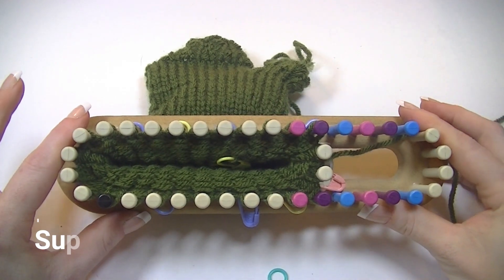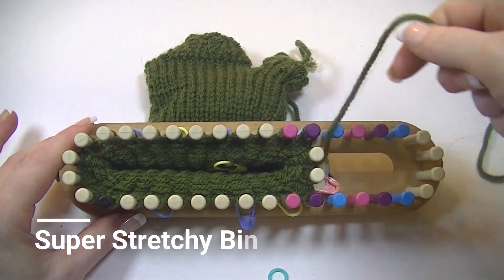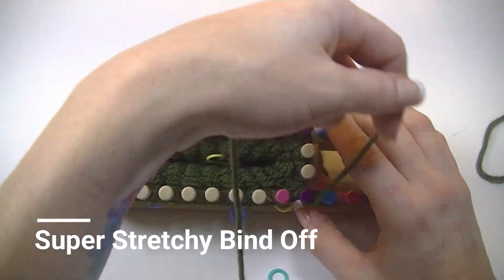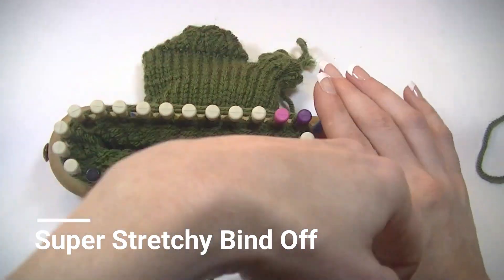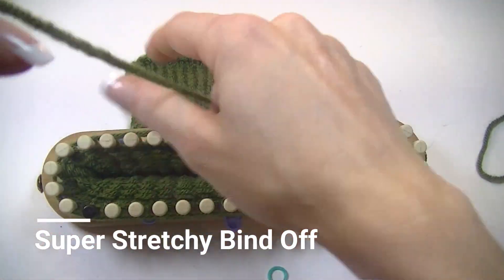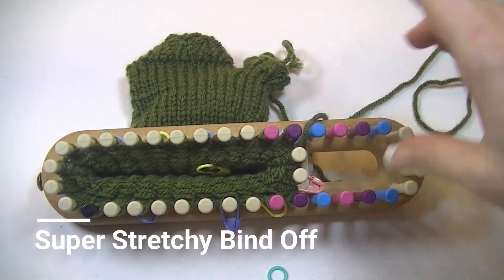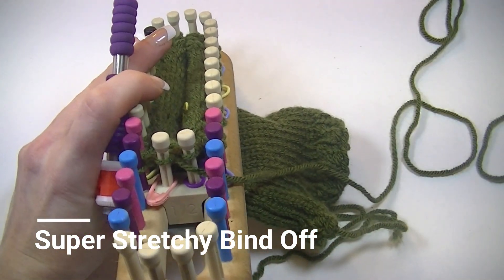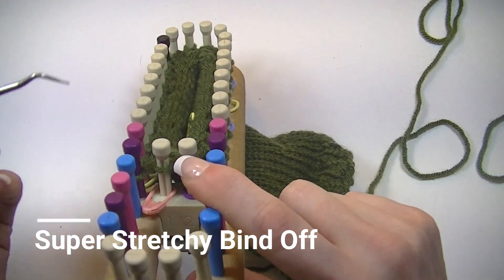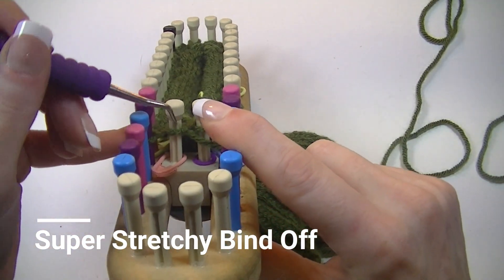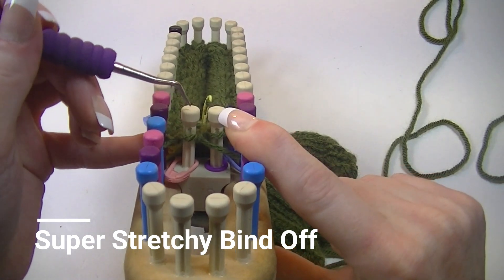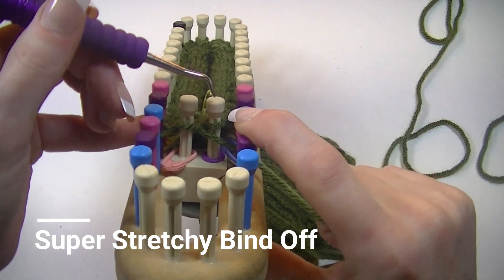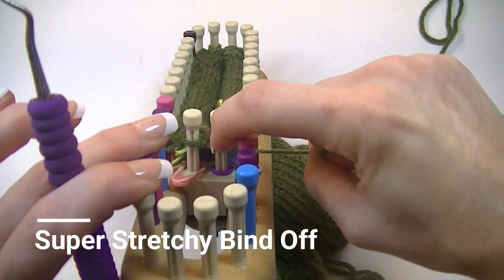For the bind off, we are using the super stretchy bind off. So you take your working yarn, wrap around the working pegs three times, and then cut. That is just to ensure you have enough yarn to do the cast off. For the super stretchy cast off, there is really two steps to it. Your first step is to the yarn the working peg is coming from, which we are starting at peg 01. You want to skip your next peg, which for this time it's 02, so you will have two strands in front of that.